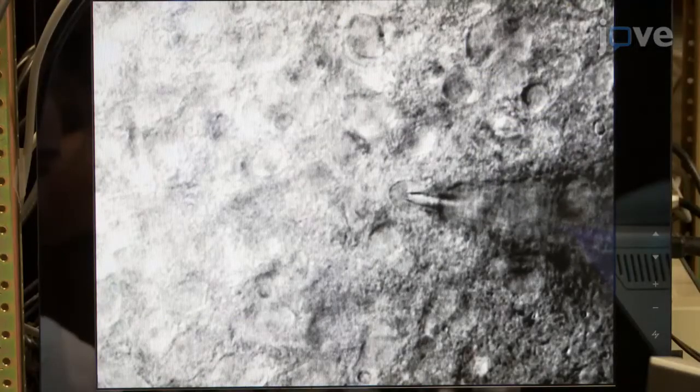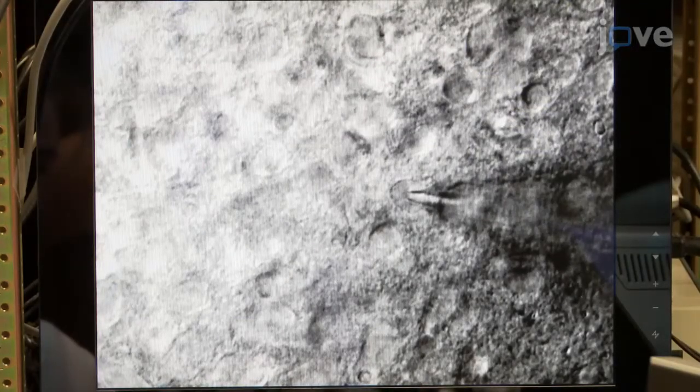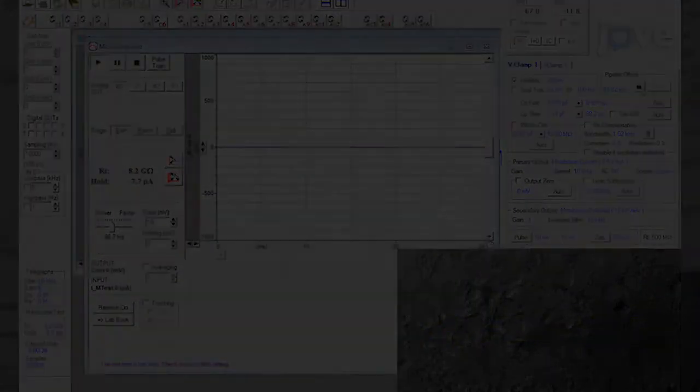Subsequently, slightly pull the pipette away from the cell diagonally to remove excess pressure. Compensate for the fasting.